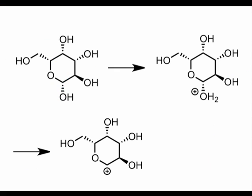Let's take a moment now to think about how polysaccharides form mechanistically. We've seen in a variety of contexts already that the anomeric carbon in cyclic monosaccharides is a good electrophile. Protonation of the anomeric OH group, followed by beta elimination, produces an electrophilic oxocarbenium ion.